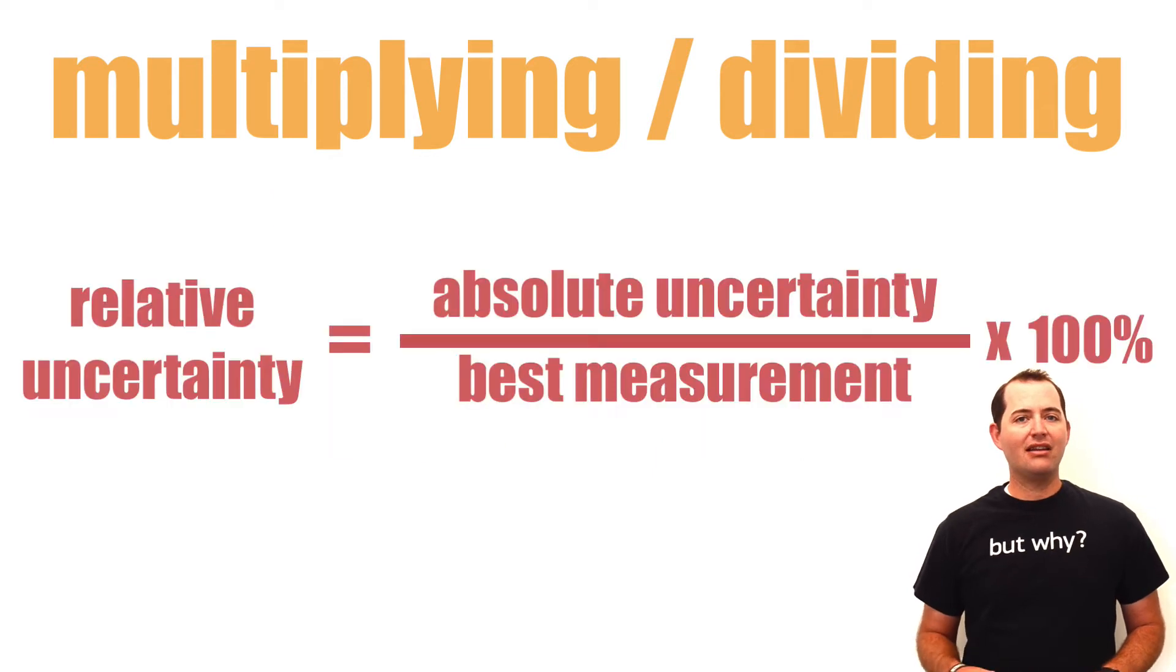To calculate a relative uncertainty, we take our absolute uncertainty and divide it by our measured value. Then we multiply by 100% to convert it to a percentage.